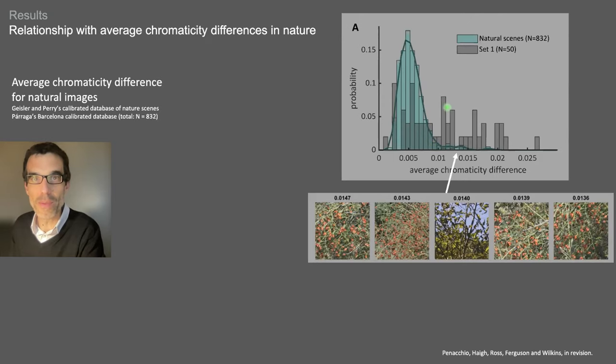Finally, we found that the only images that approached the value of the color metric of uncomfortable images were stimuli thought to have played a central role in the evolution of primate trichromacy, namely ripe fruits against green foliage.